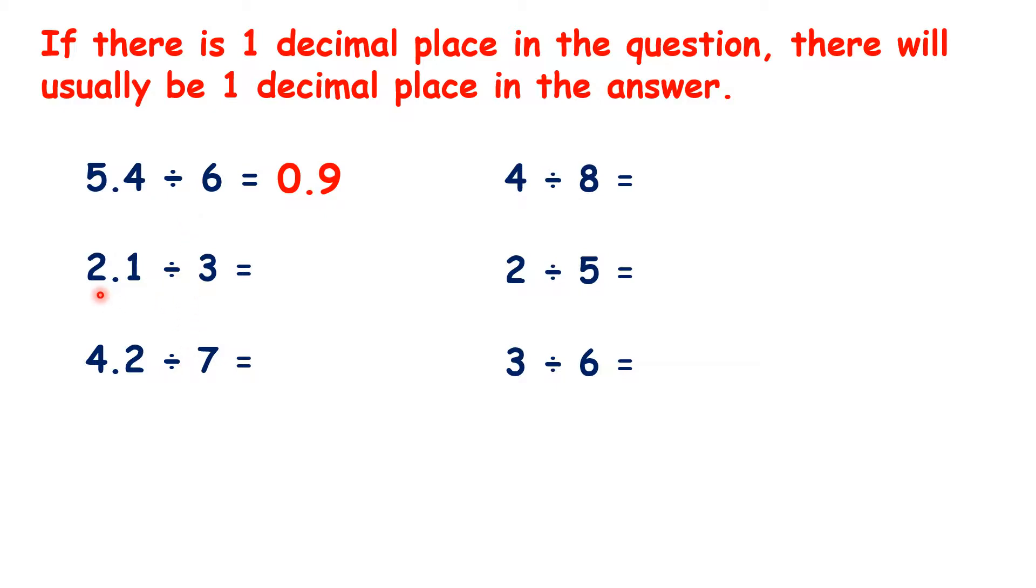We know that 21 divided by 3 is 7, so 2.1 divided by 3 is 0.7. And we know that 42 divided by 7 is 6, so 4.2 divided by 7 is 0.6.